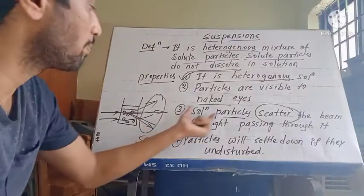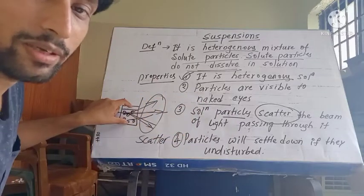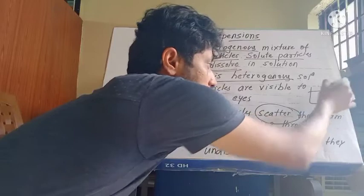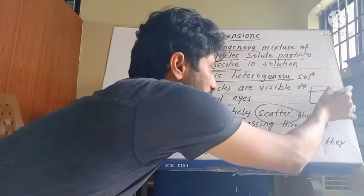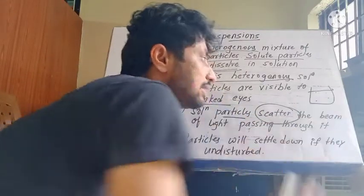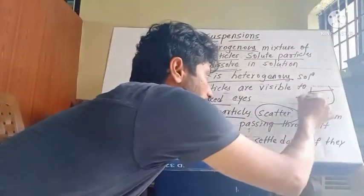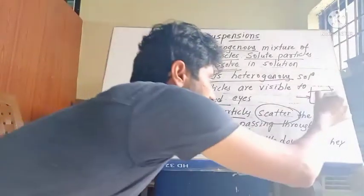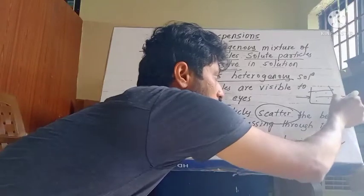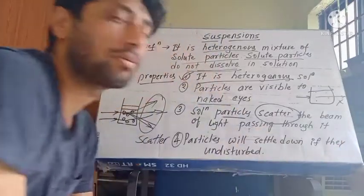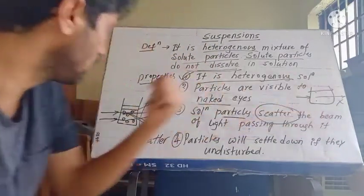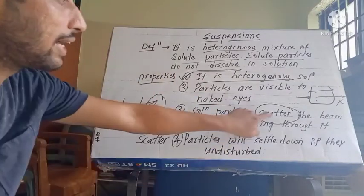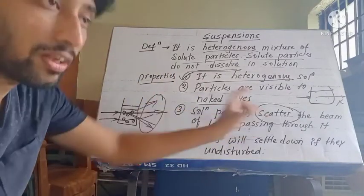This scattering happens because the particle size is very big. In comparison, in a solution the particle size is very small — we cannot even see the particles. When a beam of light passes through a solution, there is no disturbance, so it passes directly with no scattering. But in a suspension, because the particle size is big, it must and should scatter the beam of light.